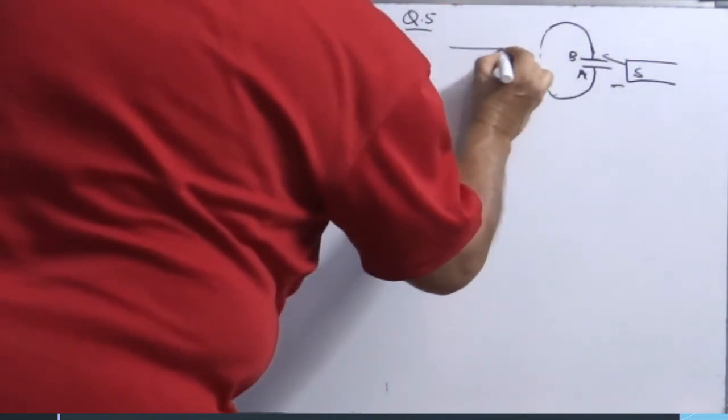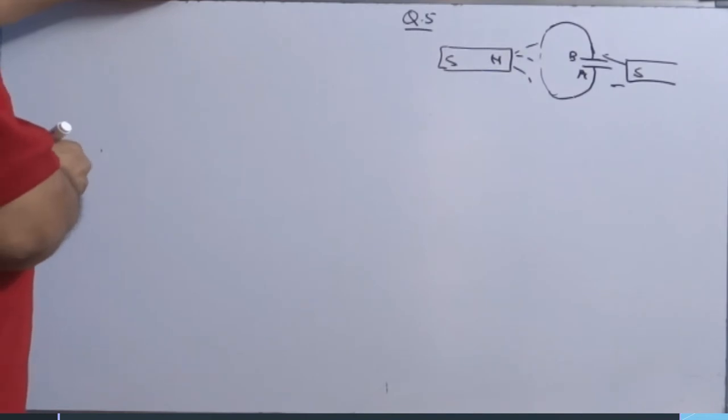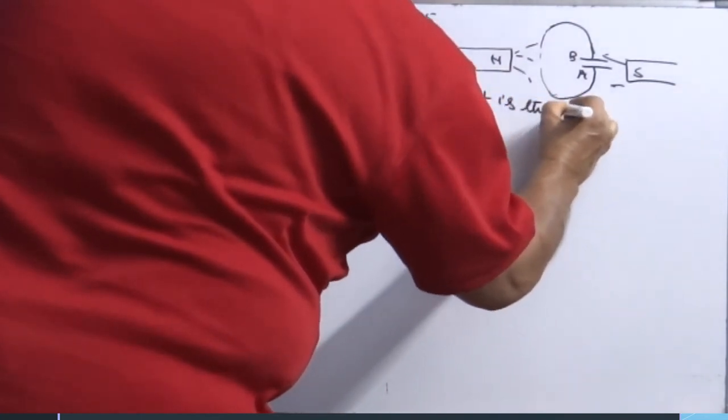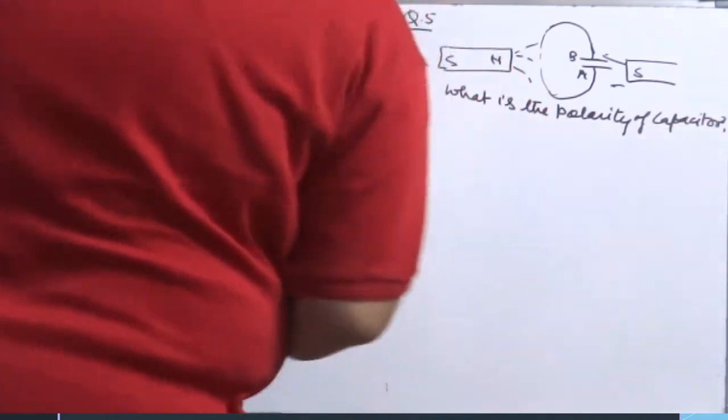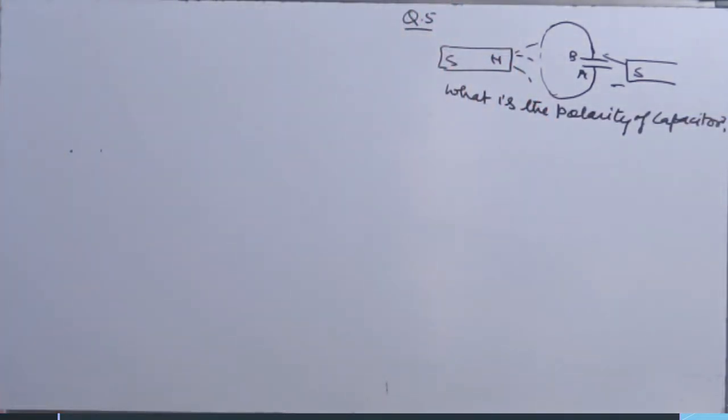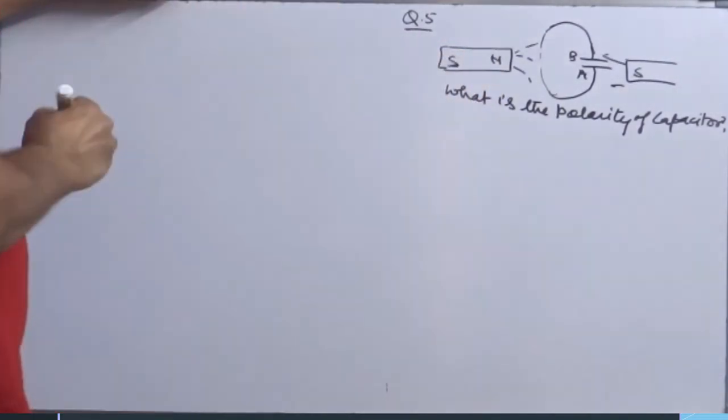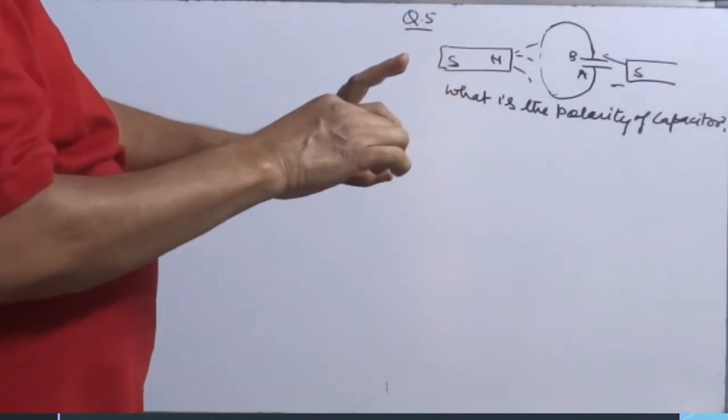Plate A and plate B. From the back side, north pole is moved. What you have to see, what is the polarity of capacitor? Beautiful question. Now, since capacitor is there in the circuit, current cannot flow because it blocks DC completely. But this is like this, coil, here capacitor is connected. South pole is moved like this.